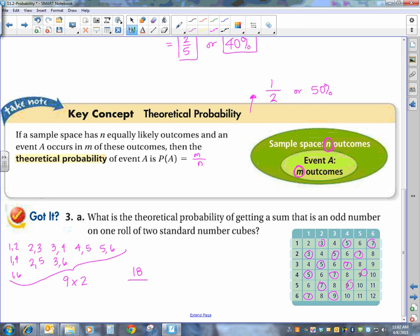So I've got all the odd numbers. I'm doing a little too fast. 9, and then I have 2 11s. So 18 out of a possible 36 gives me a fraction of 1 half, or 50%.